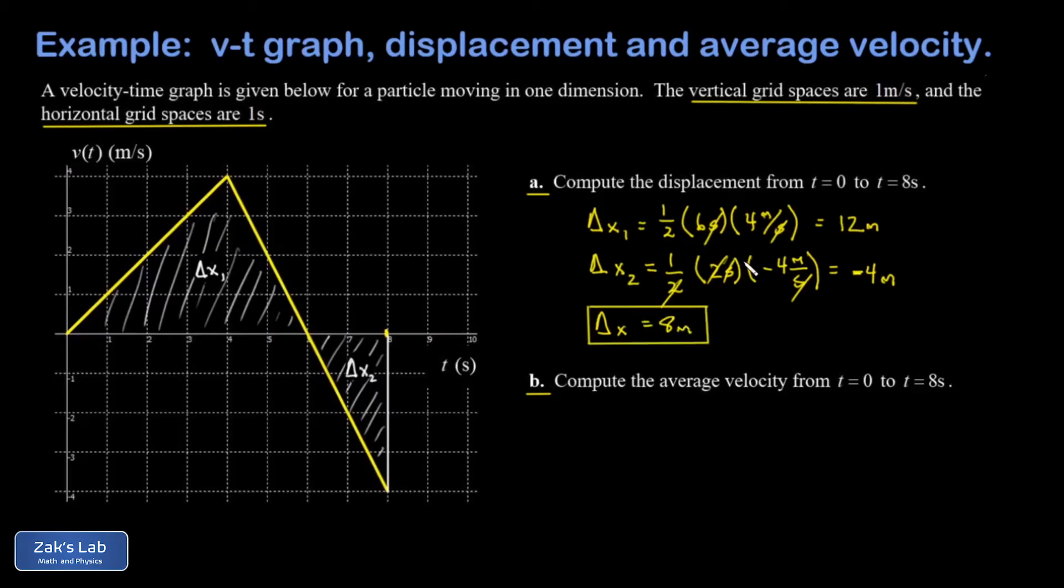In part b we're looking for the average velocity on the same time interval from zero to eight seconds.